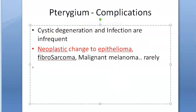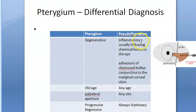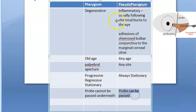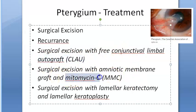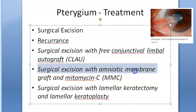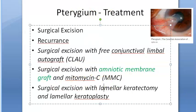Complications of pterygium include neoplastic change to epithelioma, malignant melanoma, or fibrosarcoma. Differential diagnosis: pterygium vs. pseudopterygium. In pseudopterygium, a probe can be passed; it is usually caused by chemical burns. Treatment: surgical excision with conjunctival autograft, amniotic membrane graft, and mitomycin C to prevent recurrence.